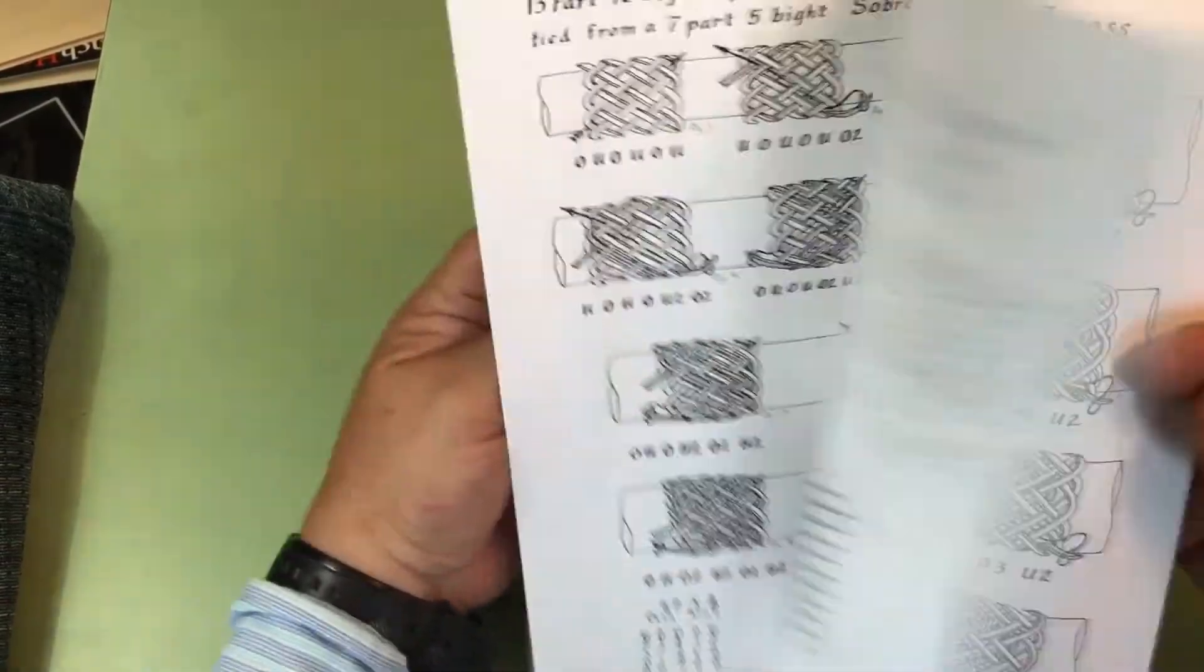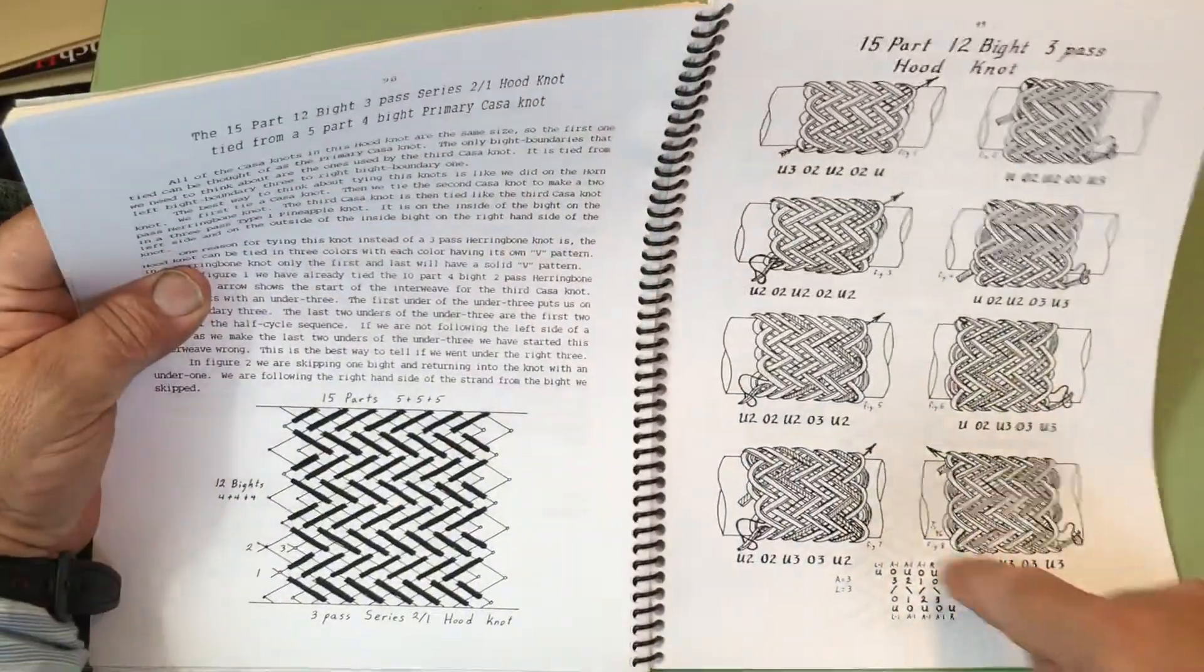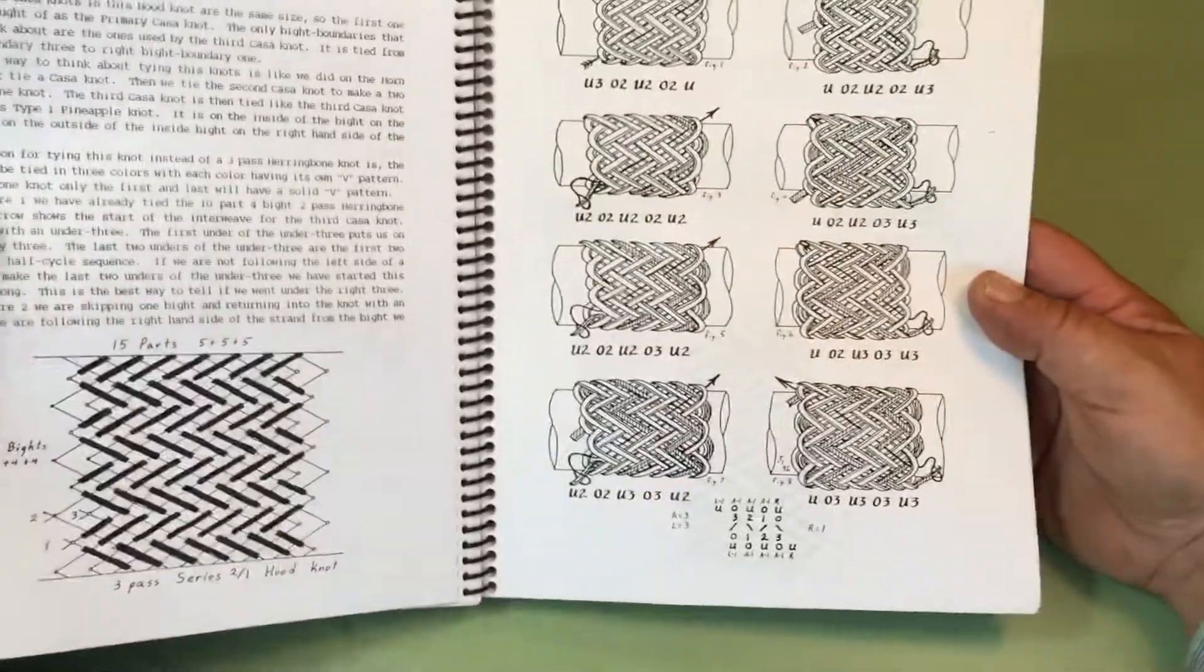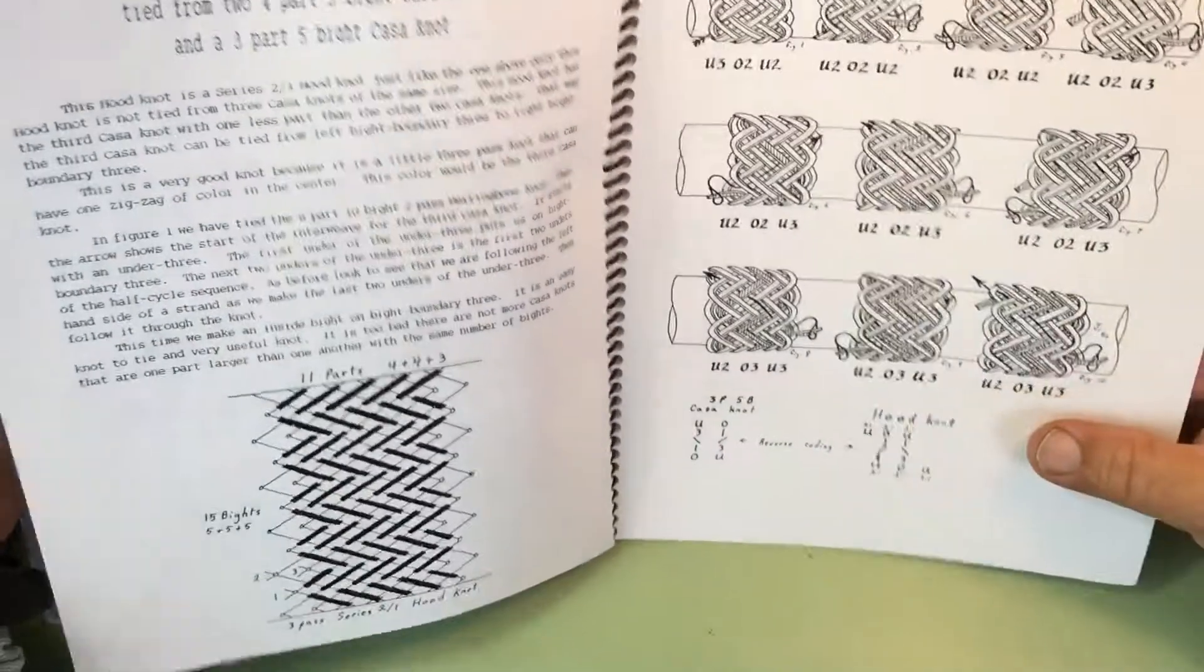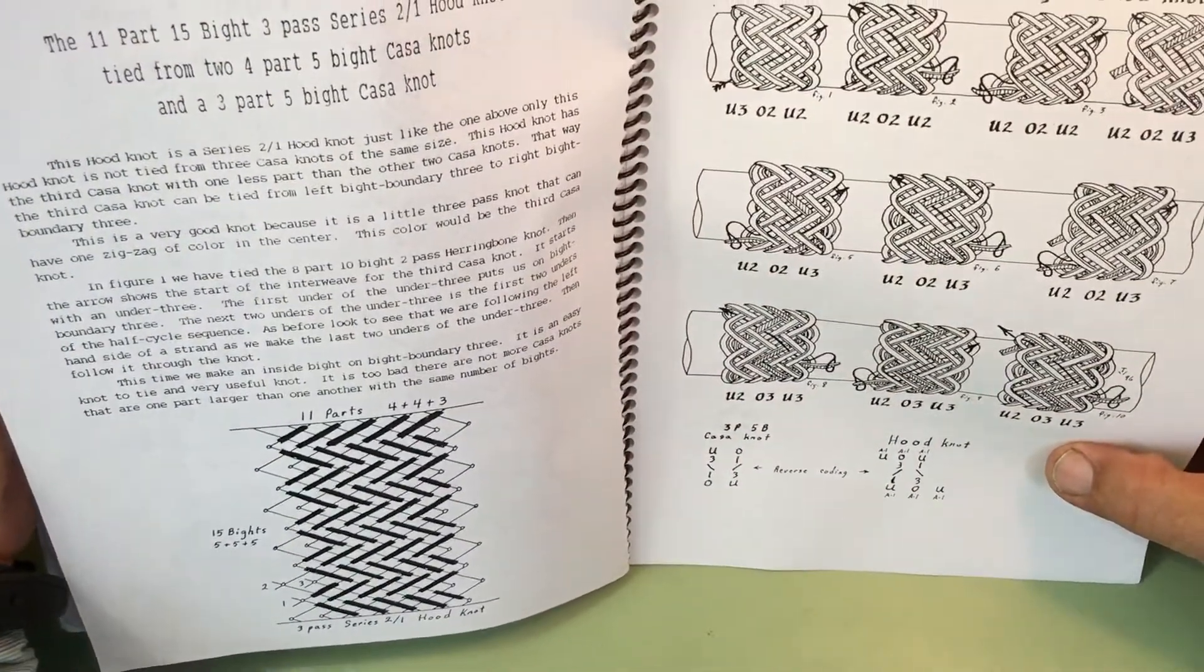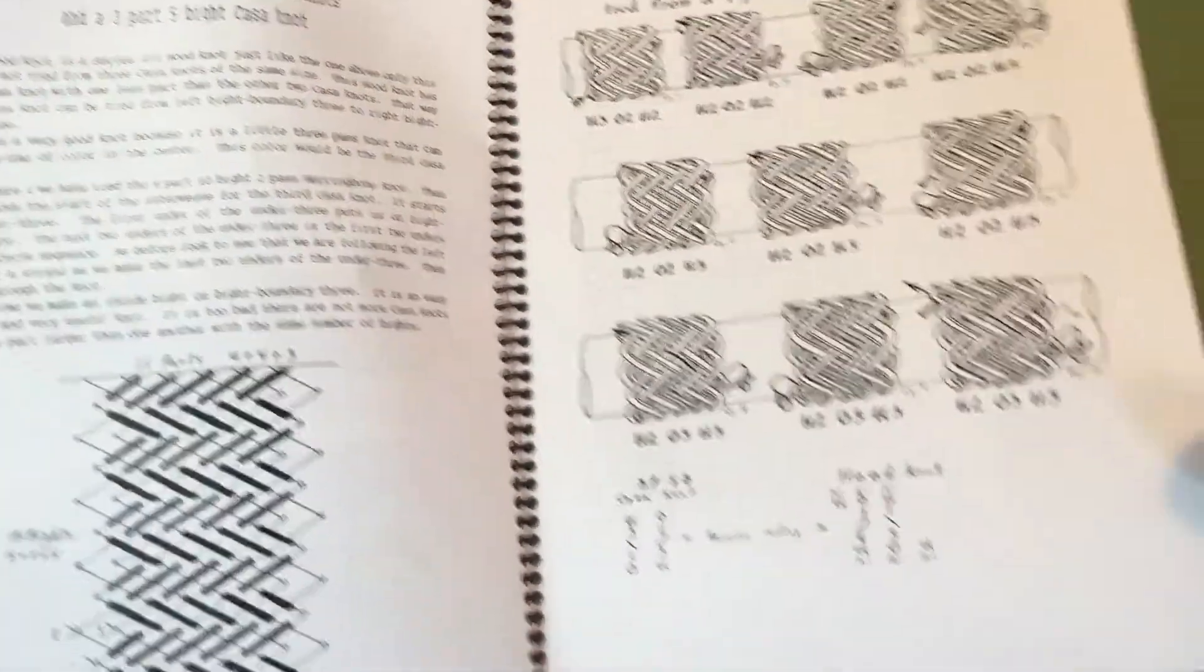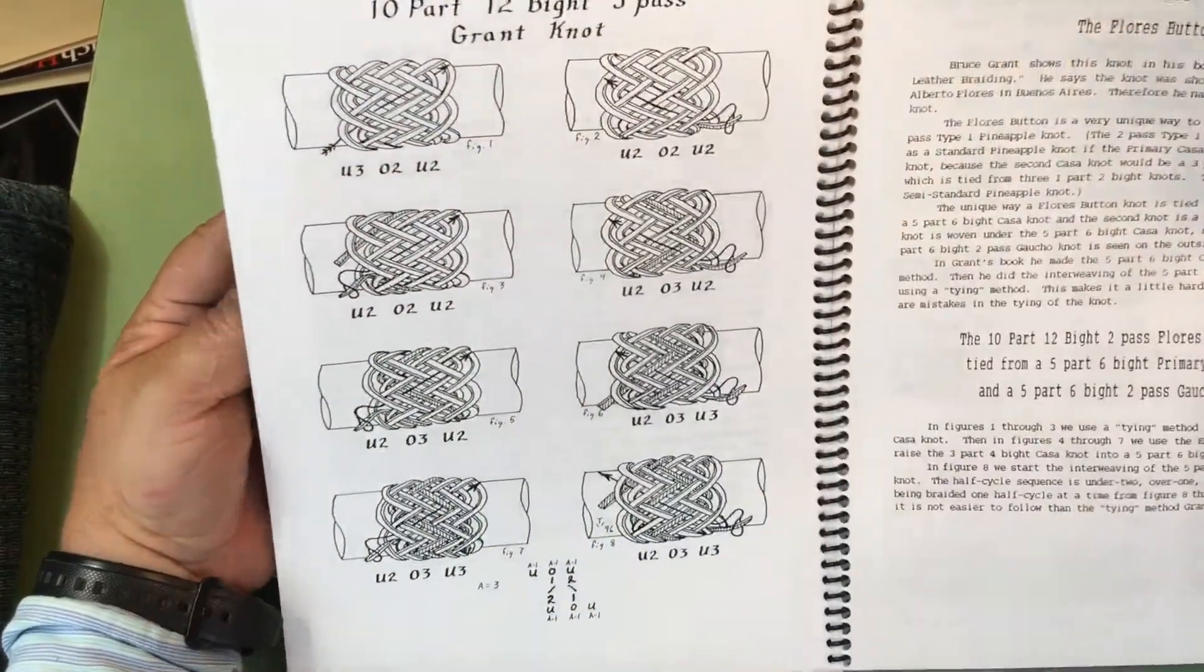This is a herringbone pineapple knot, horn knot. You can see how you set up a horn knot. This is a hood knot. You can set up the algorithm diagram for a hood knot. So, I just wanted to show you that there is many ways that you can set up. There's a grant knot. You can set up the algorithm diagram for tying a grant knot.